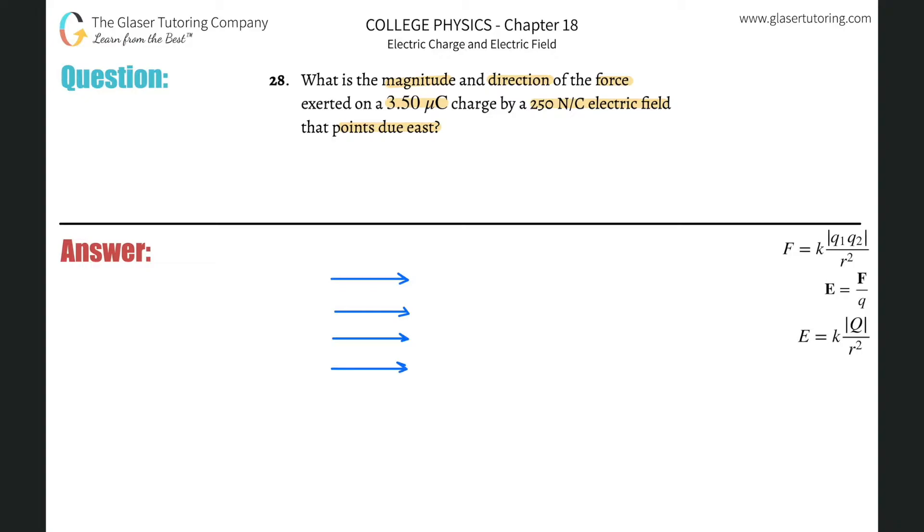Now what we remember from the prior video is that these electric field lines always point towards something that is negative, and they always point away from something that is positive. So I like to always make my electric fields with this little capacitor type of system. Alright, helps me conceptually understand the problem.